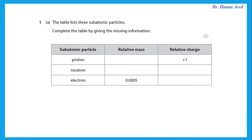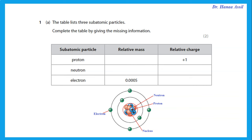The first question in this paper: the table lists three subatomic particles. Remember, subatomic particles refer to the particles inside the atom — protons, neutrons, and electrons. We are supposed to complete the table to show the mass of a proton and mass of a neutron. A proton is given a mass of 1, and neutrons have the same mass, so also a mass of 1.